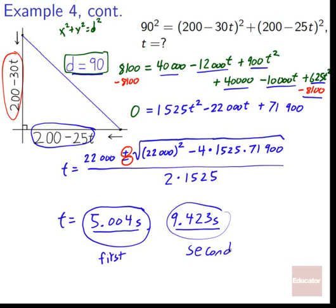Hope you've got a good sense of how to complete the square and how important and useful the quadratic formula can be. Make sure you memorize it — I know, I hate memorizing things too, but it comes up so often you really have to: negative b plus or minus square root of b² − 4ac, all over 2a. We'll see you next time, where we'll talk more about quadratics and parabolas. See you at Educator.com. Bye!